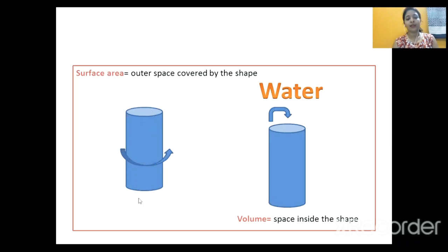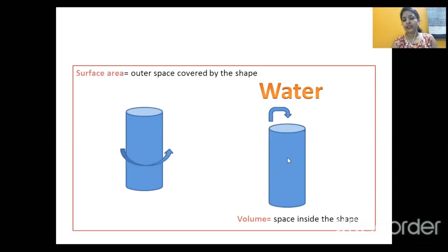Now next comes volume. Suppose I have taken the same cylindrical shape, but here I will assume this as a glass. I filled this glass with water, filled it up to the brim. So the volume of this shape is equal to the amount of water inside it. As a conclusion: surface area is equal to the outer boundaries covered by the shape, but volume is equal to the space inside the shape.